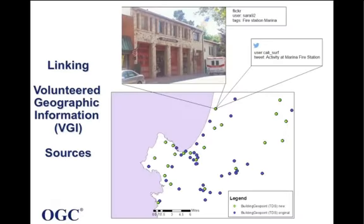In this case, if we have one point — for example in the Gazetteer — we can get more information about that point from sources such as Twitter or Flickr.